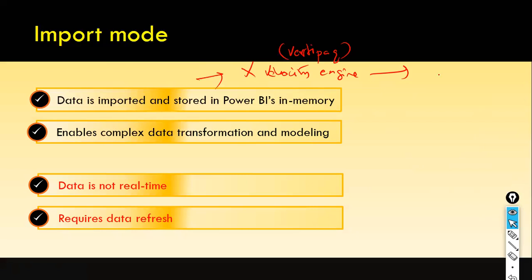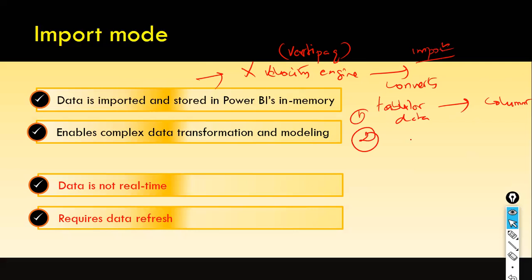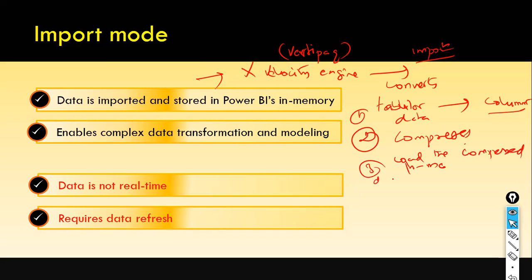Only the name changed — the functionality remains. The X-Velocity engine, whenever you import any data, converts that tabular data to columnar data. That is step one. Step two: after converting tabular to columnar data, it compresses the data using some compression techniques and algorithms. Then it loads the compressed columnar data into memory.